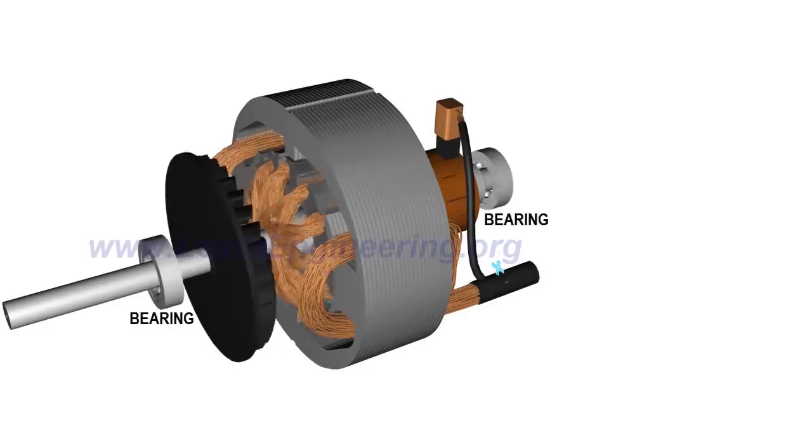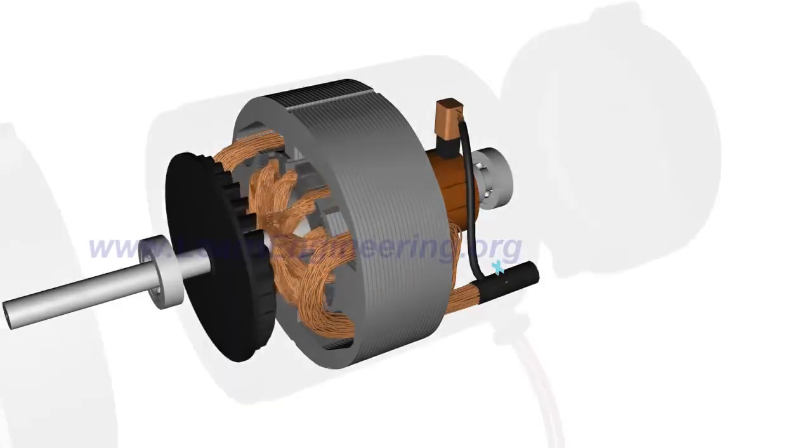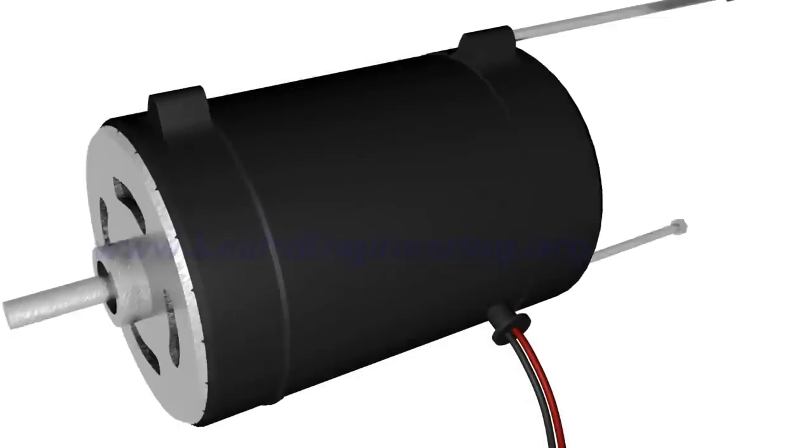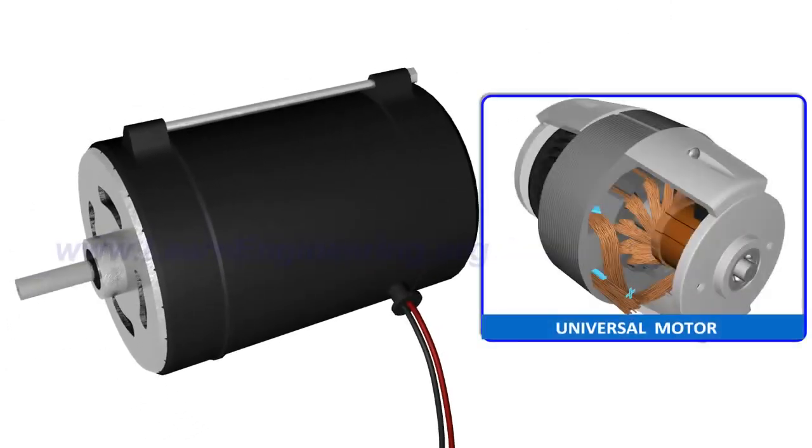One of the interesting variations of the DC motor is a universal motor, which is capable to run under both AC and DC power sources. To know more about it, please check the next video. Thank you.